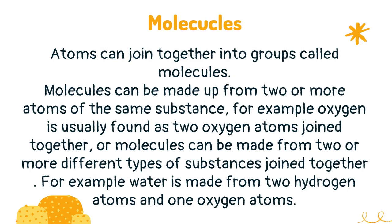Atoms can join together into groups called molecules. Molecules can be made up from two or more atoms of the same substance. For example, oxygen is usually found as two oxygen atoms joined together. Or molecules can be made from two or more different types of substances joined together — for example, water is made from two hydrogen atoms and one oxygen atom.